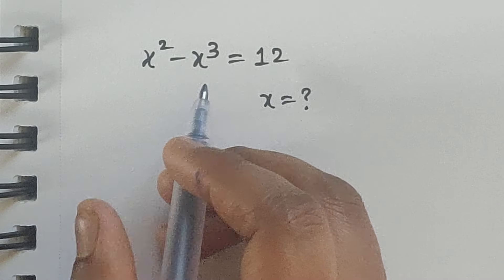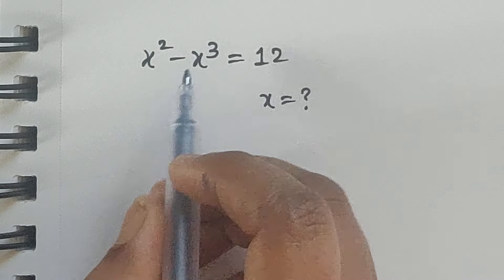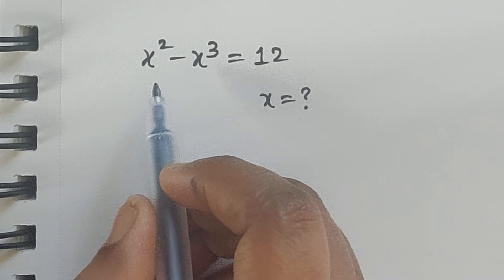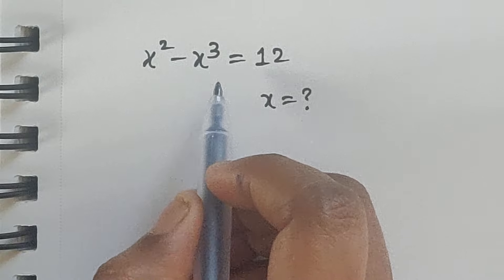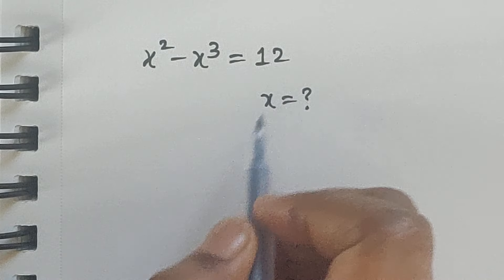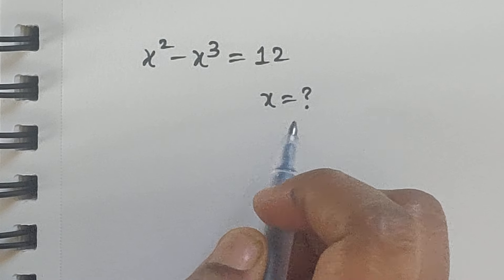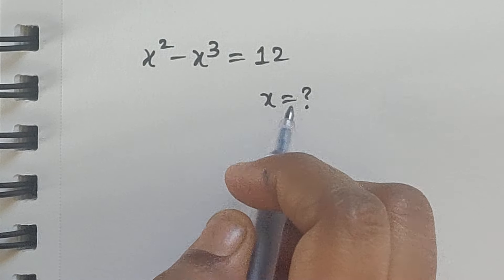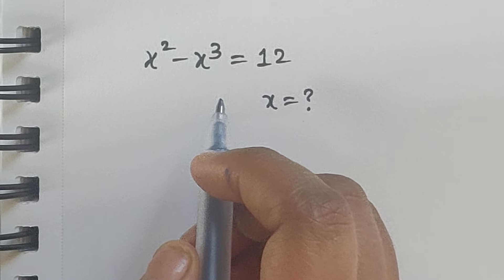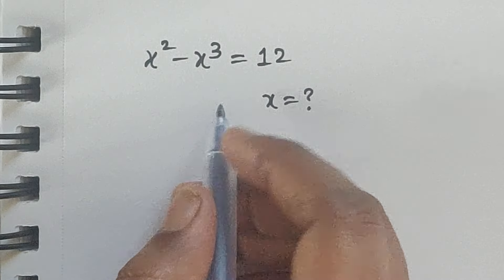Hello everyone, welcome back to our channel. Here we have one problem: x squared minus x cubed equals 12. In this problem we have to find the value of x. So how do we solve this? Let's see.